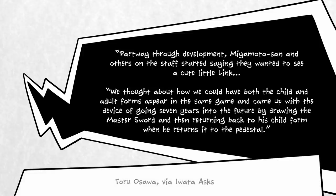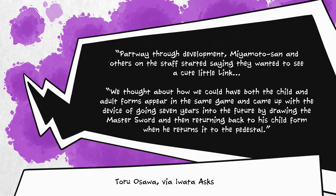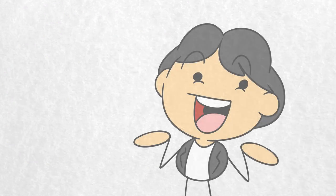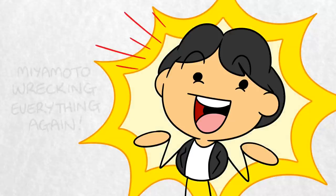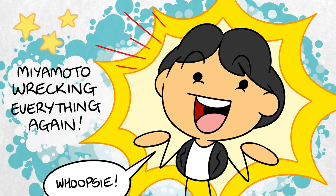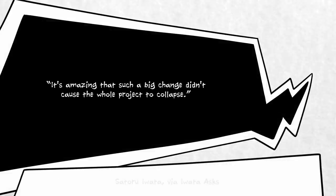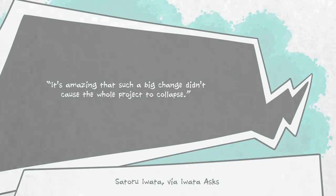Partway through development, Miyamoto and others on the staff started saying they wanted to see a cute little Link. They thought about how they could have both the child and adult forms appear in the same game, and came up with the device of going seven years into the future by drawing the Master Sword, then returning to his child form when he returns it to the pedestal. The game was already quite a way into development at this stage, and the decision dramatically increased the number of character animations required. Iwata remarked, 'It's amazing that such a big change didn't cause the whole project to collapse.' This change gave Ocarina of Time its primary definitive gameplay gimmick.